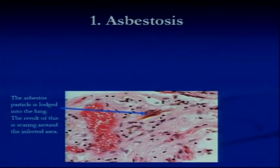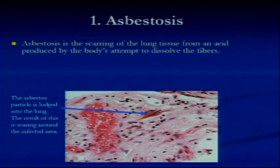Here is a picture of lung tissue, and an asbestos particle is lodged into the lung. The result of this is scarring around the infected area. Asbestosis is the first disease, and it's the lesser of the three, but it's still very dangerous. Asbestosis is scarring of the lung tissue from an acid produced by the body's attempt to dissolve the fibers. You have this fiber that's lodged into your lung tissue, and your body's trying to react and remove that.